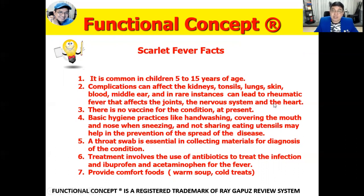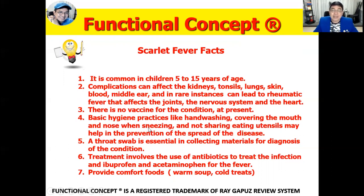If the patient develops rheumatic fever, they will have carditis or polyarthritis affecting the joints, subcutaneous nodules, erythema marginatum, and abnormal movements associated with the central nervous system — the patient may develop chorea. There is no vaccine for the condition at present, but basic hygiene practices like hand washing, covering the mouth and nose when sneezing, and not sharing eating utensils may help prevent the spread of the disease.